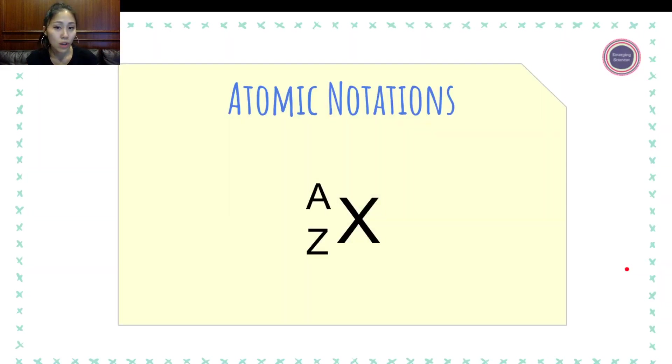The first piece on atomic notation is this symbol right here. We're going to break this symbol down. This is a symbol you're going to be using throughout chemistry. The X represents an element, so any element on the periodic table, we would place it in that X position right there.